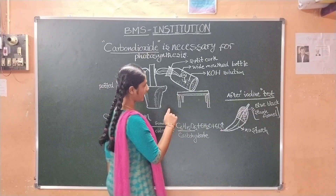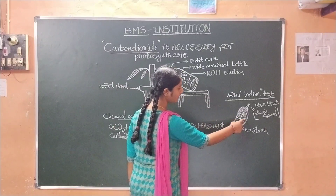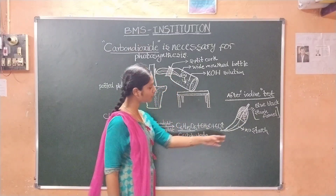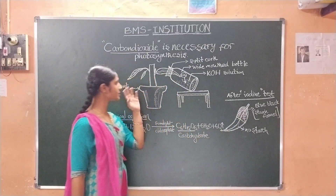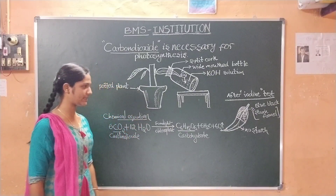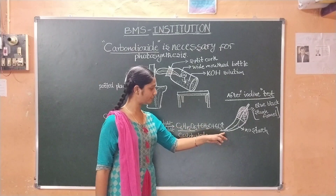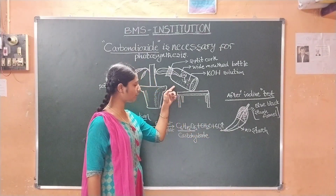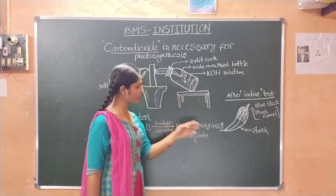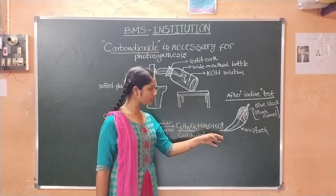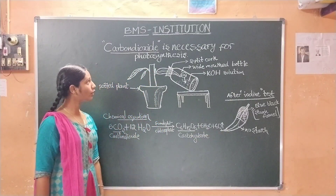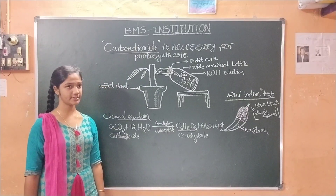We conclude from this experiment that where starch is present, the leaf turns bluish-black. Where the leaf was inside the bottle with KOH solution — which absorbed the carbon dioxide — no photosynthesis reaction occurred, so no starch was formed and there is no color change. Therefore, from this experiment, we concluded that carbon dioxide is very necessary for photosynthesis reaction.